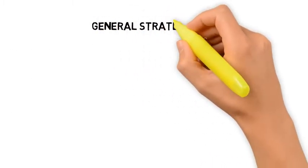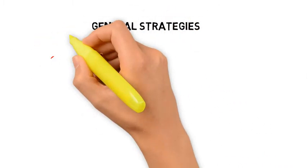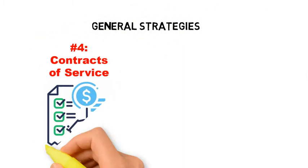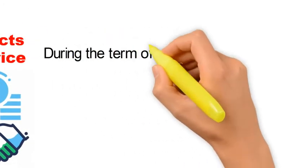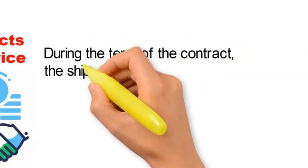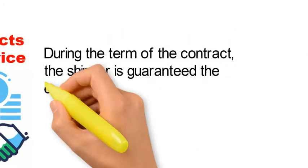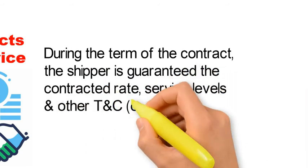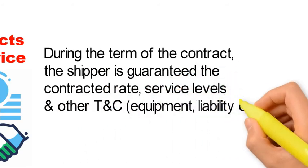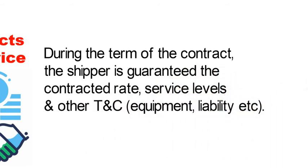The fourth general strategy is based on contracts of services. By locking carriers into fixed contracts of services, the shipper is guaranteed the contracted rates, service levels, and other required conditions for the duration of each contract.